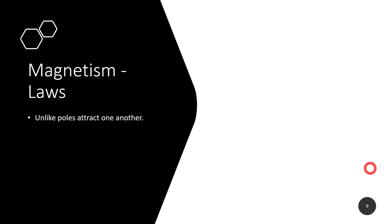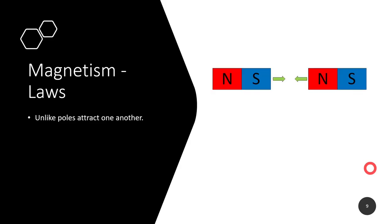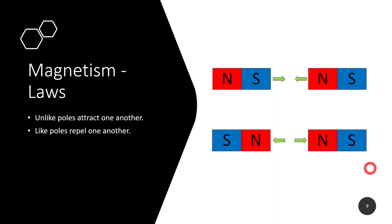A particular law, which goes right back to our atomic lesson, is unlike poles are attracted to one another - so north and south are attracted to one another. Conversely, like poles repel from one another, so north and north repel from each other. If south and south were facing each other, they would also repel one another.